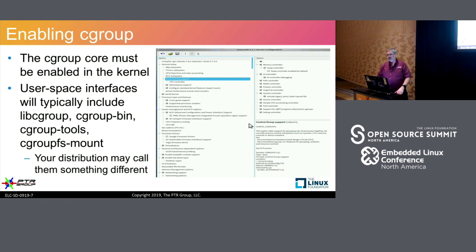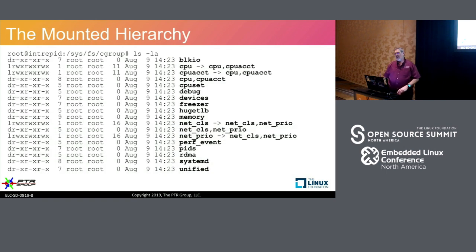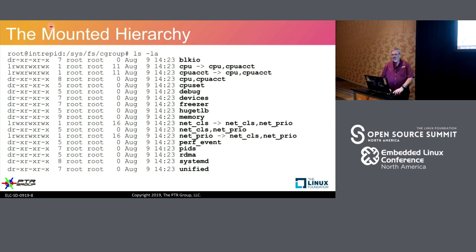There are also user space interfaces you need: libcgroup, cgroup-bin, cgroup-tools, and cgroupfs-mount. Those are the Debian names; Red Hat or SUSE distributions may differ. These are user space tools focused on manipulating and controlling CGroup. Once the CGroup filesystem is mounted, you can see the hierarchy — with things like blkio, CPU sets, and the interesting Freezer controller, which we'll talk about.